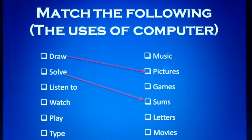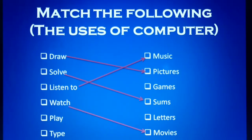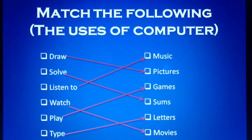Third one: listen to. We can use a computer for listening to music. Next one: watch. Usually we can use a computer for watching movies and other videos. Next one: play. We can use a computer for playing games. And last one: type letters. We can use a computer for typing letters, poems, documents, etc. So this is our first activity, match the following.